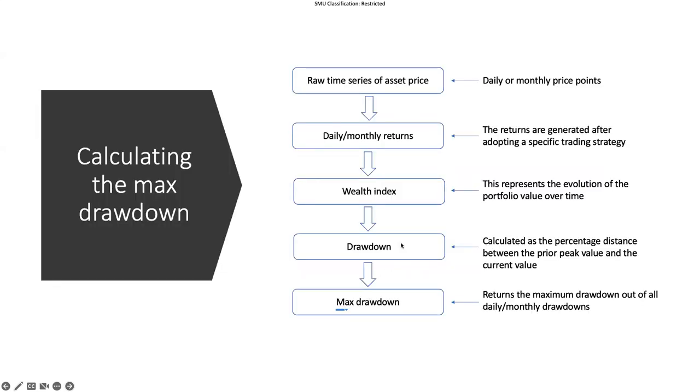Now to calculate the max drawdown there are a few steps involved. We start from the raw time series of the asset price, it could be daily or monthly. We will convert it to the daily or monthly returns, and these are the percentage returns generated following a specific trading strategy.